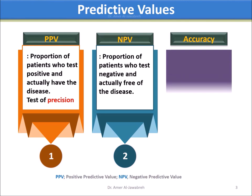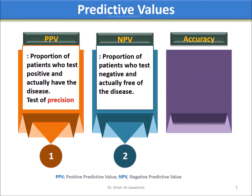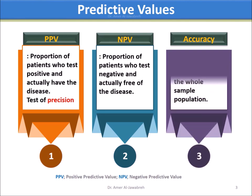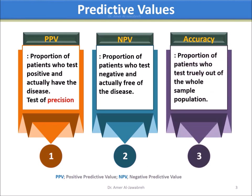Accuracy is the proportion of patients who test truly out of the whole sample population.